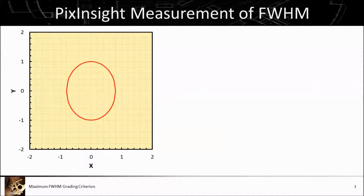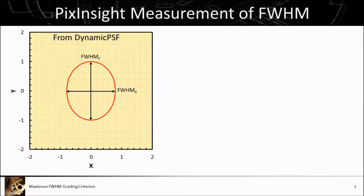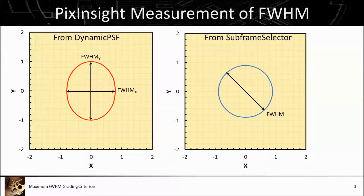PixInsight has different ways of measuring the full width half maximum in various tools. In the dynamic PSF function, they provide an elliptical fitting routine which gives us the FWHM in the maximum direction and the FWHM in the minimum direction. However, the subframe selector script only gives us one value for the FWHM, so we don't know what the maximum value is. The value it gives for the same star is between the minimum and the maximum values.